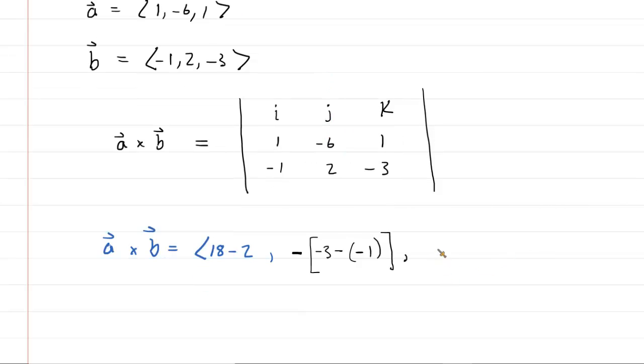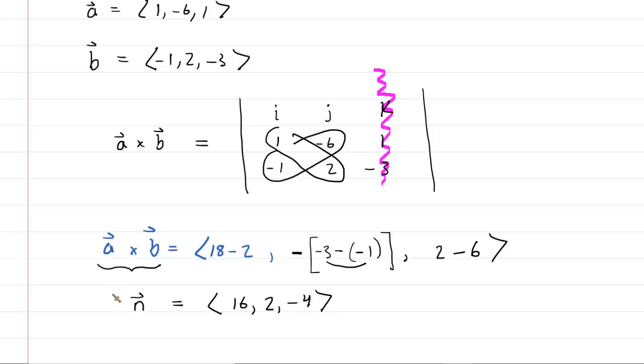And then to get our z component, we're going to kind of cross off the k hat column right here and do one more determinant. We're going to have one times two, which is two minus negative one by negative six, which is positive six. So now all we have to do is clean this up. Now remember, the cross product between those two vectors gives us a third vector that is perpendicular to both of those vectors, which is indeed perpendicular to the plane. So therefore, it's the normal vector. We simplify, we get 16. Let's see, negative three plus one is negative two, but then negate that. So you get positive two, and then two minus six is negative four. So there's your normal vector.